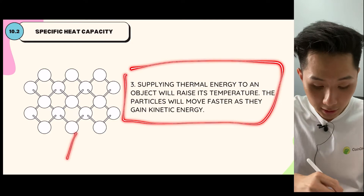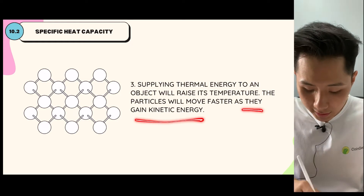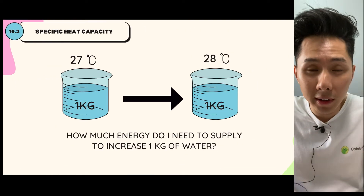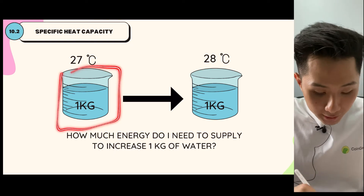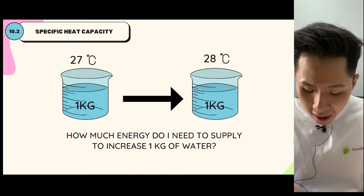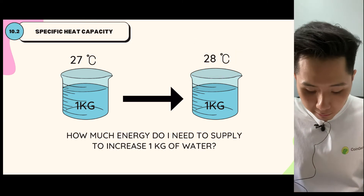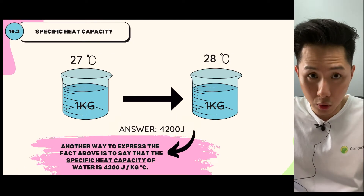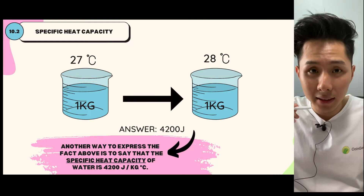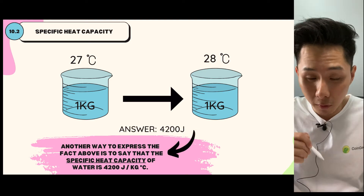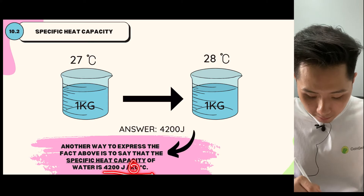Supplying thermal energy to an object — whether solid, liquid, or gas — is going to raise its temperature, because particles will move faster when they're being heated as they gain more kinetic energy. So it's important for us to understand how much energy exactly is needed to supply to a substance to increase its temperature by one degree Celsius. Here I have one kilogram of water at 27 degrees Celsius. The answer is 4,200 joules — that's the amount of energy needed to increase one kilogram of water by one degree Celsius, and that's the definition of specific heat capacity. Another way to say it: the specific heat capacity of water is 4,200 joules per kilogram per degree Celsius.